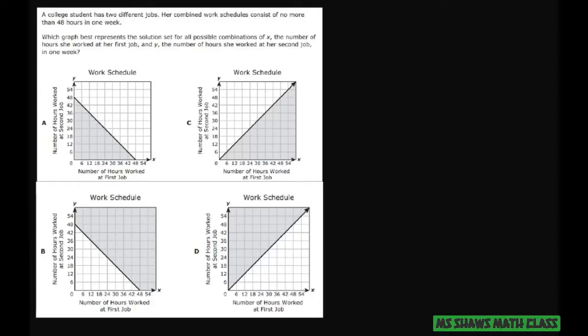the number of hours she worked at her second job in one week. So basically what I'm going to do is set up X as her first job, and Y as her second job. And just reading this, I can say the sum of her first and her second can't be bigger than 48.